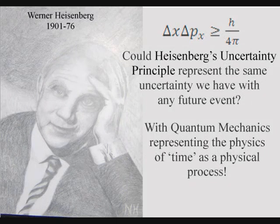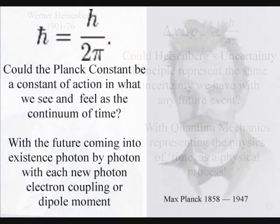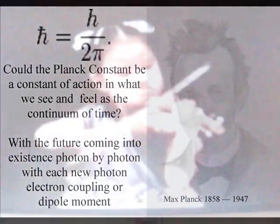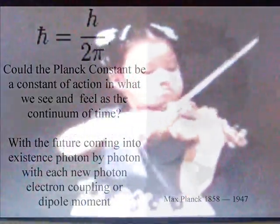At the smallest scale this is represented mathematically by Heisenberg's uncertainty principle, with the Planck constant being a constant of action in the process that forms what we see and feel as the passage of time.